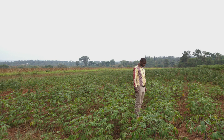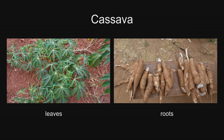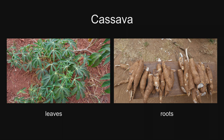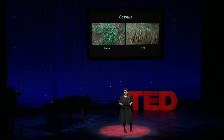Arguably, the most important of these 600 plants is cassava, as seen here with my friend Dr. Donald Kachigamba. Cassava leaves and roots are eaten by millions of people in South America, Southeast Asia, and many countries in Africa.